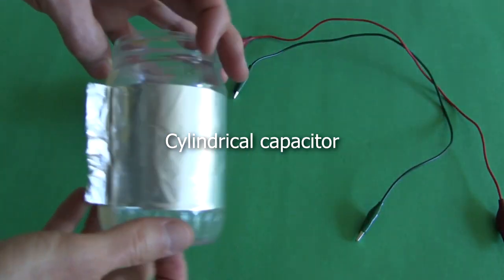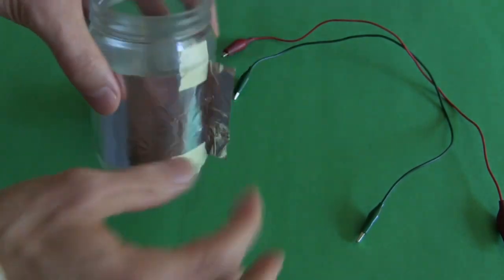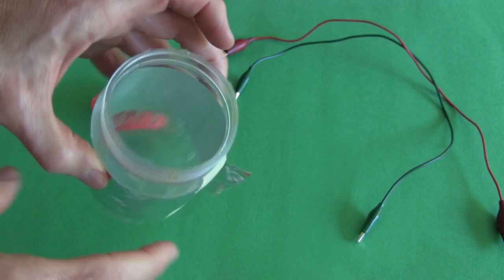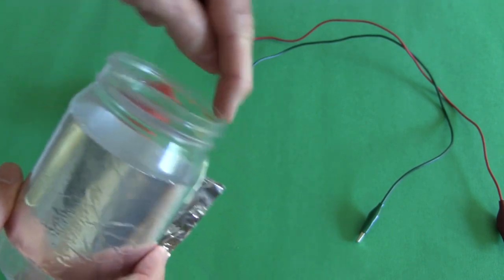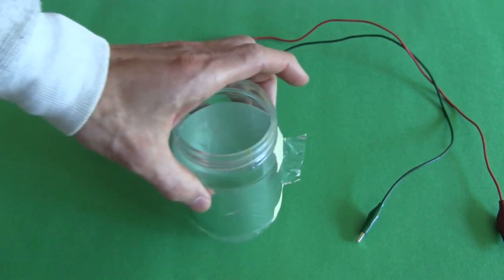For this one I've taken a jar and I've simply wrapped aluminum foil all the way around it, left a little bit out so I can connect with it. On the inside normally I'd put aluminum foil, but this one has a small mouth here and it's hard to get the foil inside, so I'm going to do something else instead.